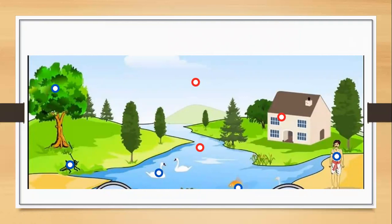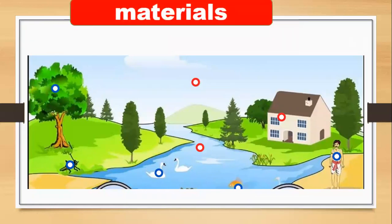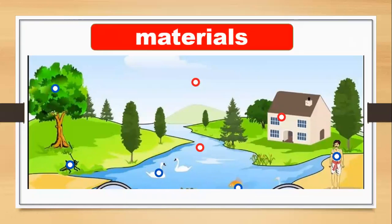Look at this picture. You can find both natural and man-made materials. The natural materials include trees, grass, water, mountains, and flowers. The house has a window and glass — those are materials too. You will call them materials.